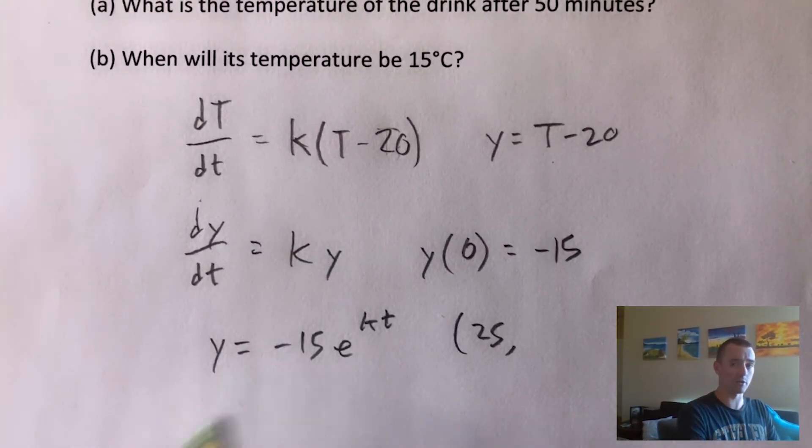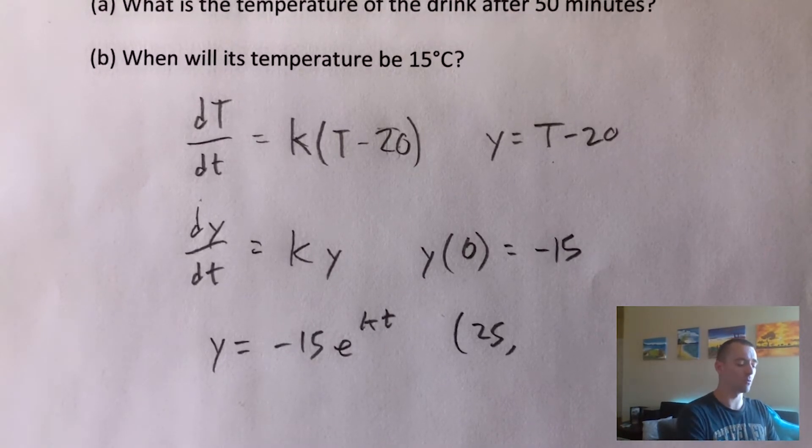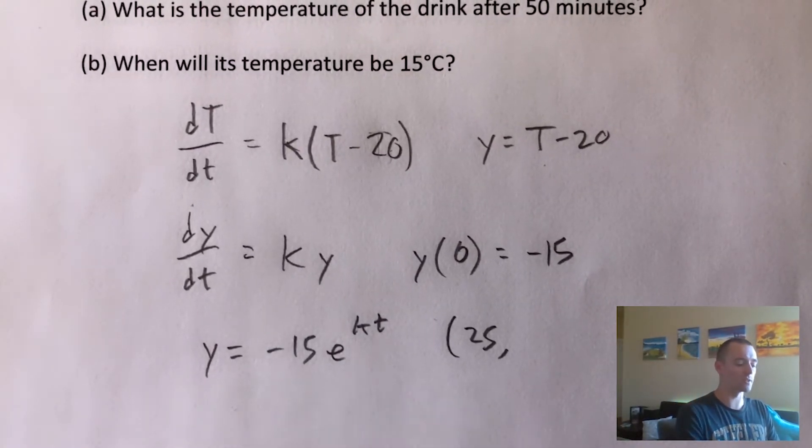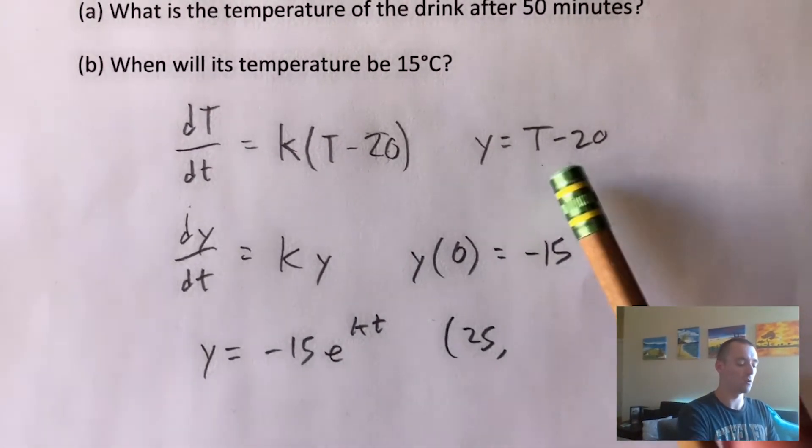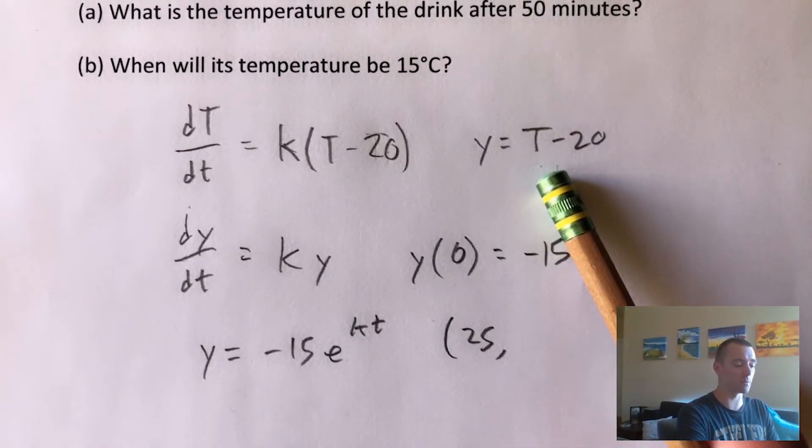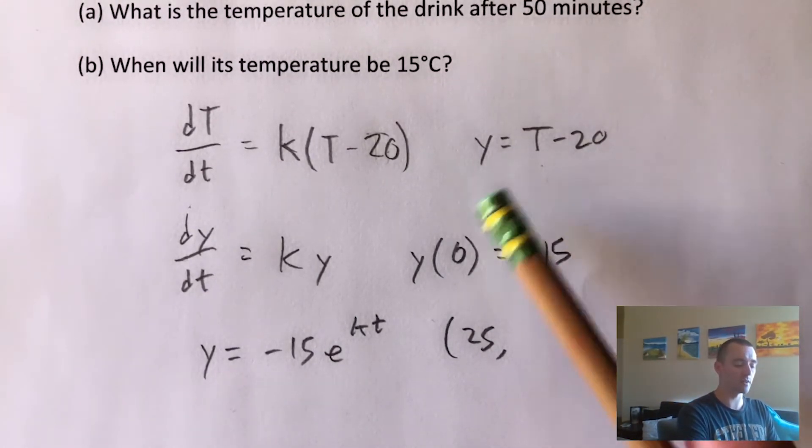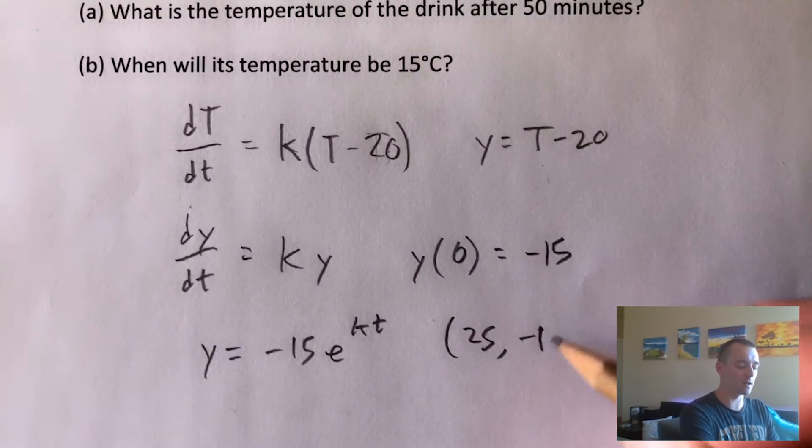But remember, this is an equation of y now, it's not an equation of temperature. So what we have to do is figure out what y is when the temperature is 10 degrees. Well, if T is 10, if big T is 10, the temperature is 10, minus 20, that tells us y is negative 10 at that point.